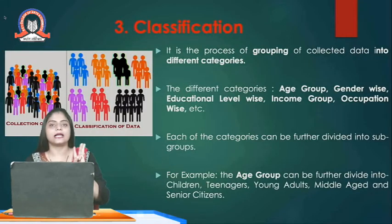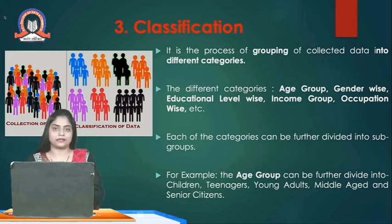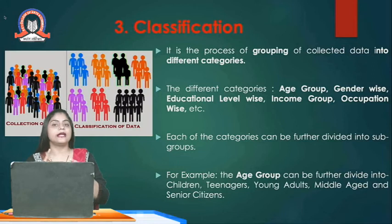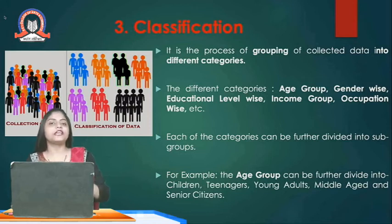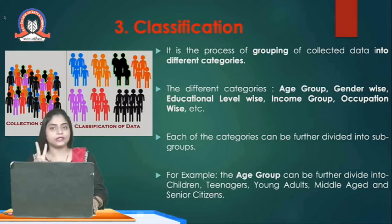The third step is classification. Classification is nothing but dividing the data into groups and subgroups. For example, different categories of information like age group, gender, educational qualification, income group, occupation, etc. We need to convert that data into groups and classifications. For example, taking age groups, we can divide into children, teenagers, youngsters, middle age, and senior citizens.